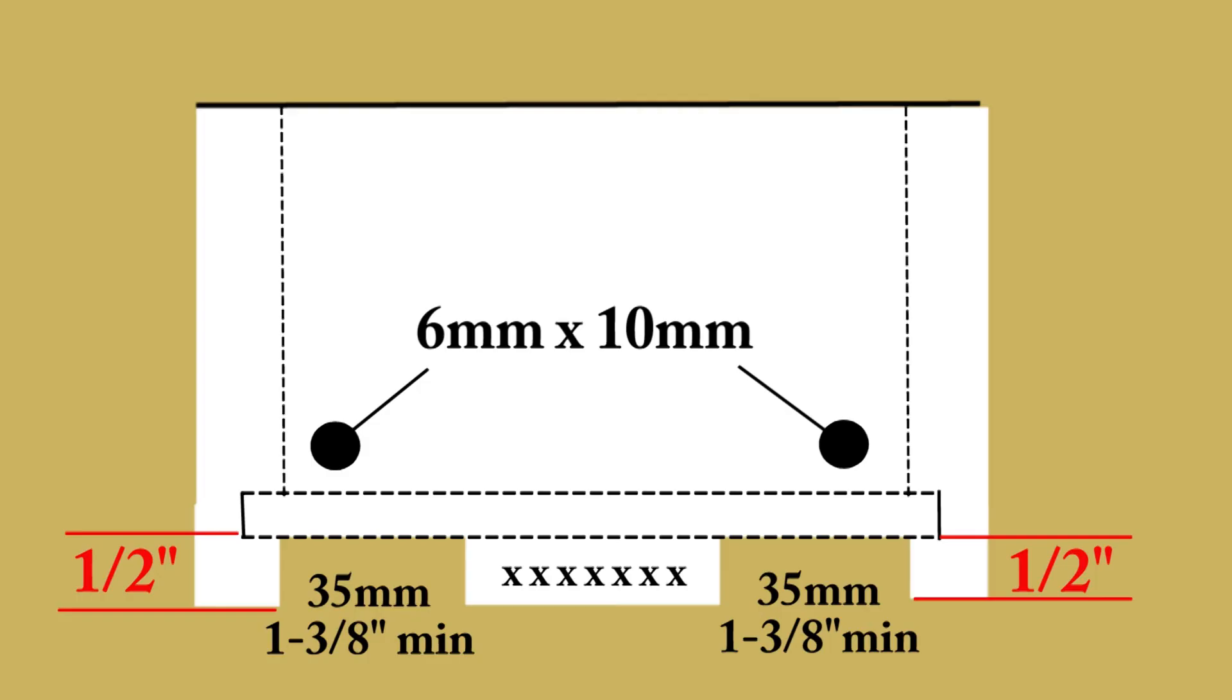Now, let's briefly take a look at the back of the drawer box for some details. You'll see that there's two notches in the back of the box. They need to be 35 millimeters wide to accommodate the drawer runners, but that's the minimum. You can take that whole bottom section out if you like.